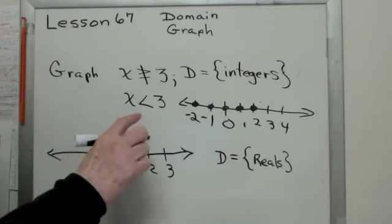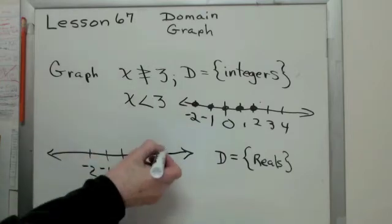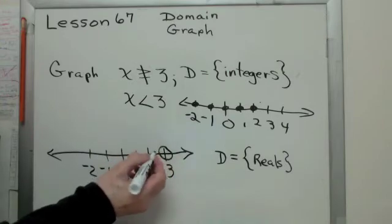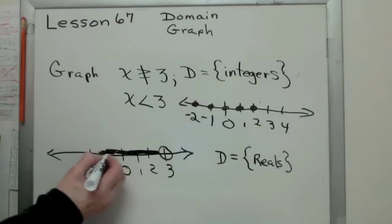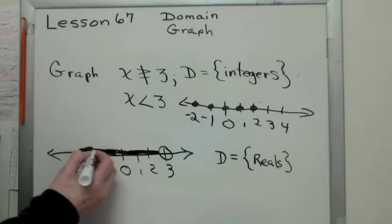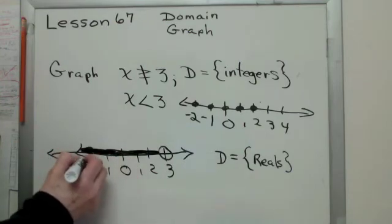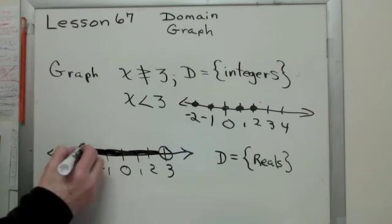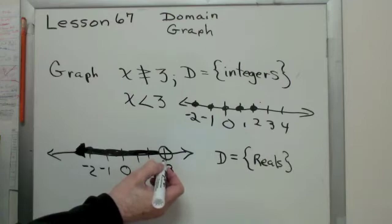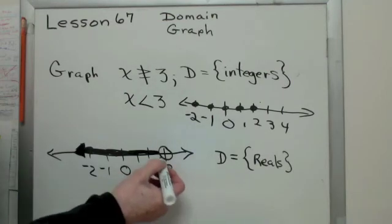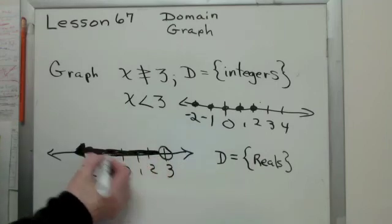Now, x less than 3. For real numbers, you put an open circle on the 3, and then you shade everything that is less than 3. The open circle means that you go as close as you can to 3, but not the number 3. So 2.999999 forever, and everything less than that is on the graph.